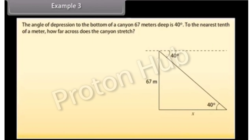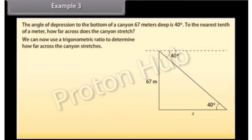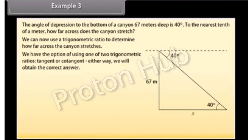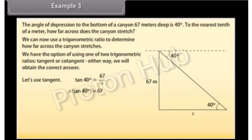Example 3: The angle of depression to the bottom of a canyon 67 meters deep is 40 degrees. To the nearest tenth of a meter, how far across does the canyon stretch? Start by drawing a diagram. Remember, the angle is 40 degrees from the horizontal. Using tangent: tan 40° = 67/X, so X = 67/tan 40° = 87.5 meters. Therefore, the canyon stretches 87.5 meters across.